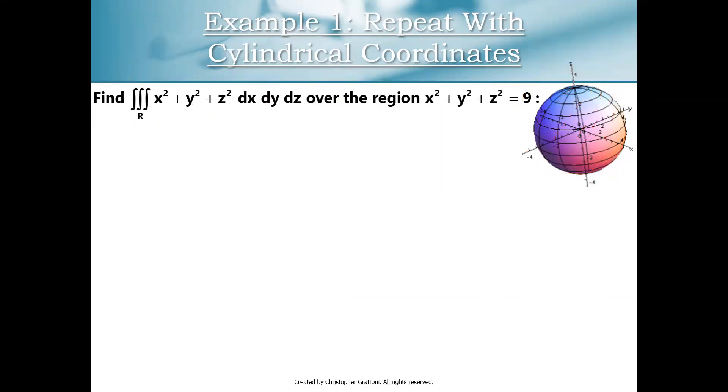All right, so if you want to see how to do this in spherical coordinates, refer back to my first video, but let's do it again now using cylindrical coordinates. So I remember that cylindrical coordinates are R cosine t, R sine t, and s. And my Jacobian determinant, I'm going to use the absolute value of that and use R.